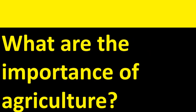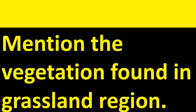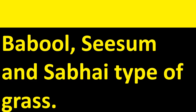What are the importance of agriculture? Mention the vegetation found in the grassland region. Wawool, Sesam, and Sabay types of grass are found in grassland vegetation.